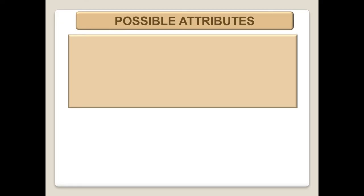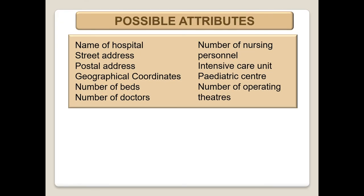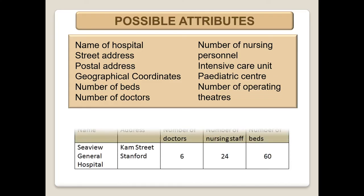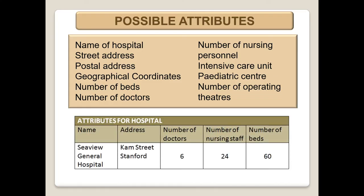Possible attributes — remember, attributes are descriptions or characteristics. Of a hospital, we can get the name, street address, postal address, number of beds and number of doctors. Here is an example of an attribute table for a hospital: name, address, number of doctors, number of nursing staff and number of beds.